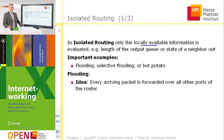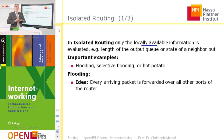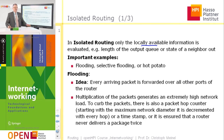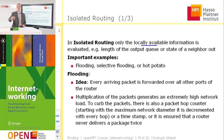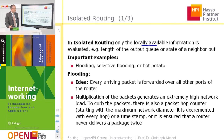Let's have a closer look at flooding. Flooding is a very simple idea: every arriving packet is forwarded over all other ports of the router. In this way, there is a multiplication of the packet. If the router has five or six ports, the packet is forwarded over all the other ports — so instead of one packet, the router forwards five packets. This generates an extremely high network load.